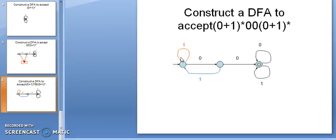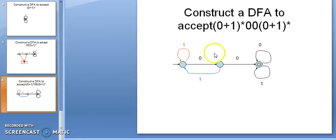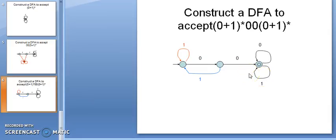If I put a self-loop of 1 on the start state, the possible strings are any number of 1s followed by 00 — that is valid. For the intermediate state, if I put a self-loop of 1 there, the string would be 0 followed by any number of 1s followed by 0, which would not contain 00 as a substring. So that 1 should go back to the start state. Now strings like 1*01*00 are possible, which do contain 00 as a substring. After the final state, any combination of 0 and 1 is allowed, so there is a self-loop of 0 and 1 there. This DFA is now complete.